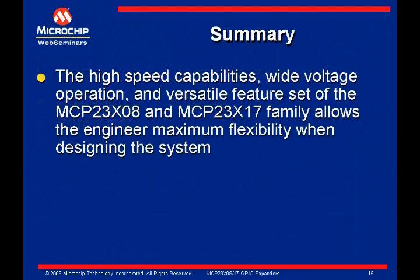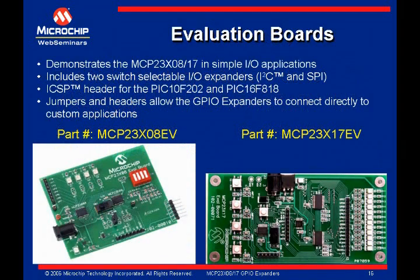The high-speed capabilities, wide voltage operation, and versatile feature set of the MCP23x08 and MCP23x17 family allows the engineer maximum flexibility when designing the system. There are two evaluation boards available at the time of this presentation: one for the MCP23x08 family, or the 8-bit family, and one for the 23x17, or the 16-bit family. Check the Microchip website for the latest list of evaluation boards. This concludes the presentation on Microchip's 8-bit and 16-bit GPIO expanders. Thank you.